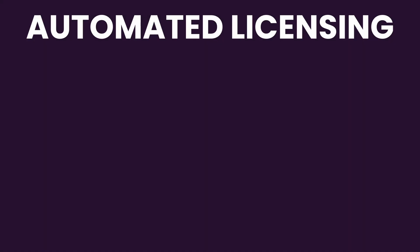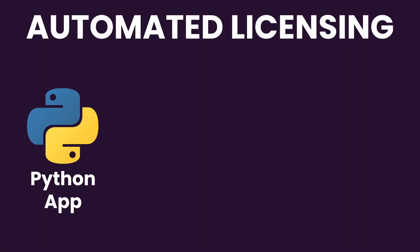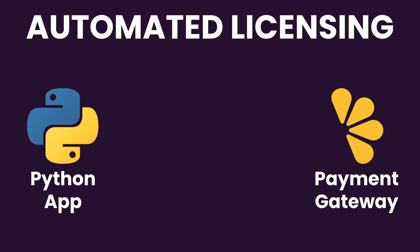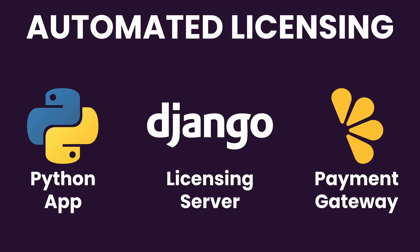To run a fully automated licensing system, you need three components: an app, a payment gateway, and a licensing server.